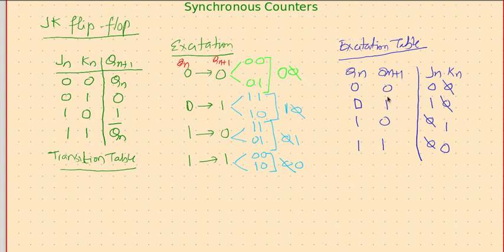For a given transition, what excitation should be given? So if we know this, then it will be useful in designing the circuit, because while designing a counter we will be knowing from what state to what state it is going to change. That means we will be knowing transition, and we don't know for that transition what is required at the input side.